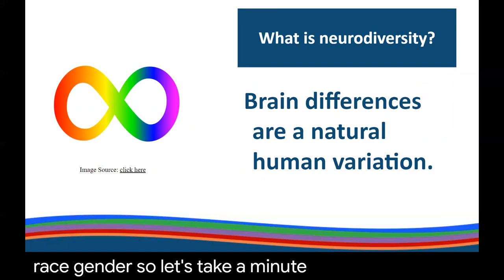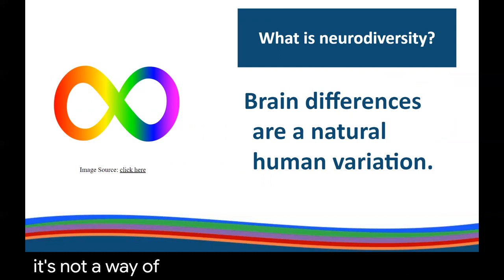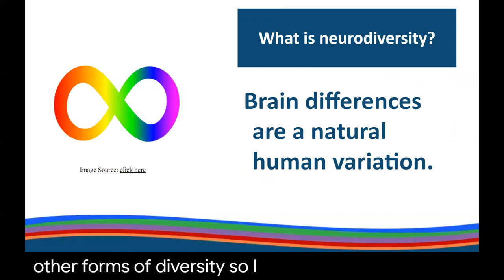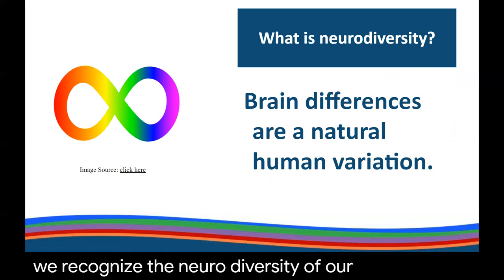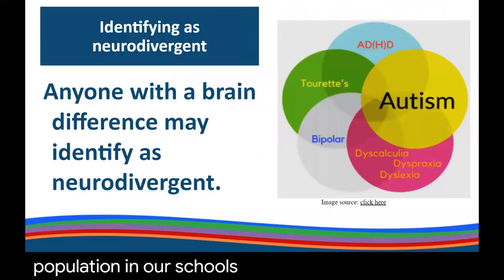It's important to consider what neurodiversity is not. Neurodiversity is not a theory or a way of thinking — it's a fact. We all have brain differences. We use the term neurodiversity in line with other forms of diversity. A usage example would be: 'We recognize the neurodiversity of our K-12 student population in our schools.'